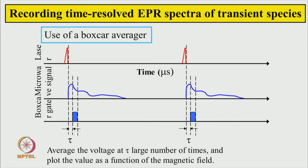To get the EPR spectrum of these radicals just at the time they are created by laser light, we use a pulsed laser which fires repeatedly. We look at the microwave signal and take a snapshot of the voltage at a given time after the laser pulse, then average this voltage after every laser pulse to improve the signal-to-noise ratio using a boxcar averager. We call this the time-resolved EPR spectrum of the transient species.